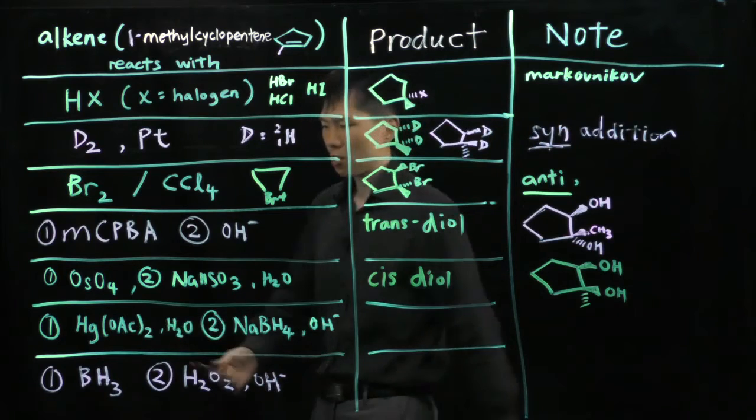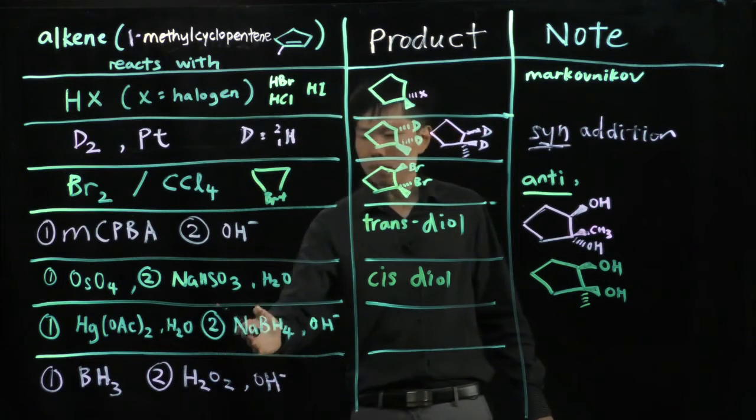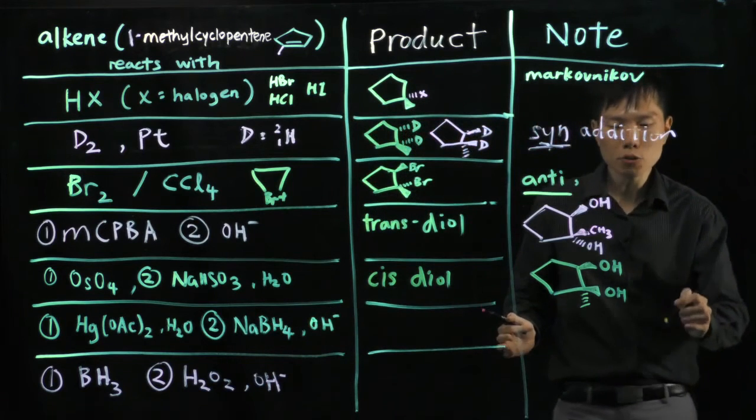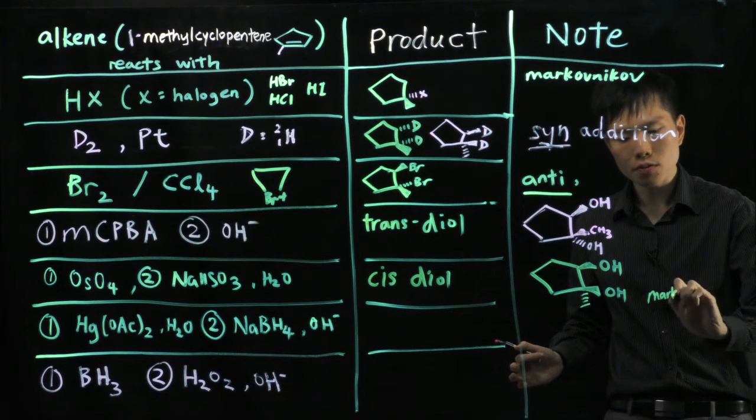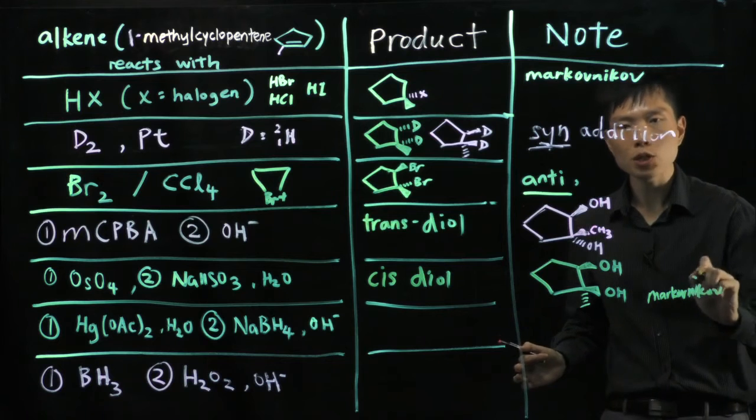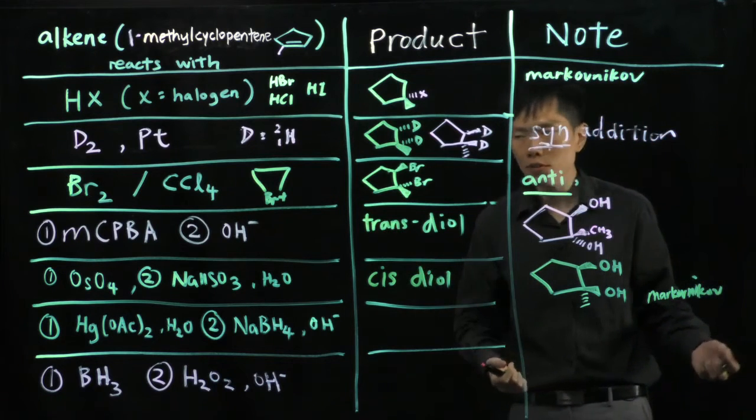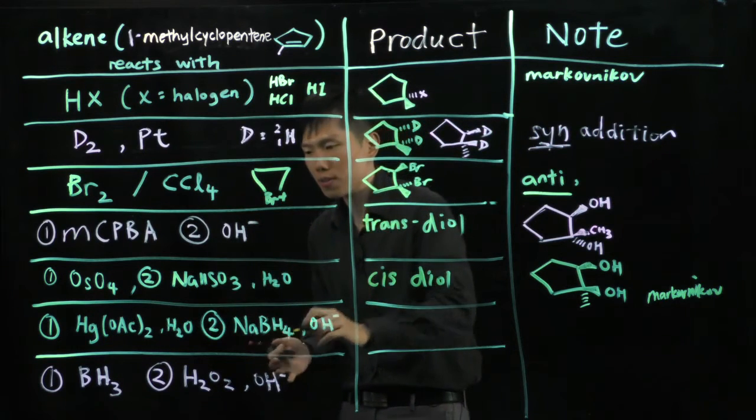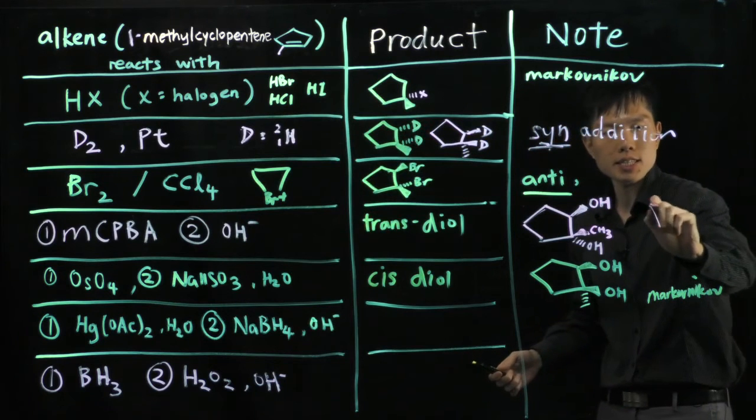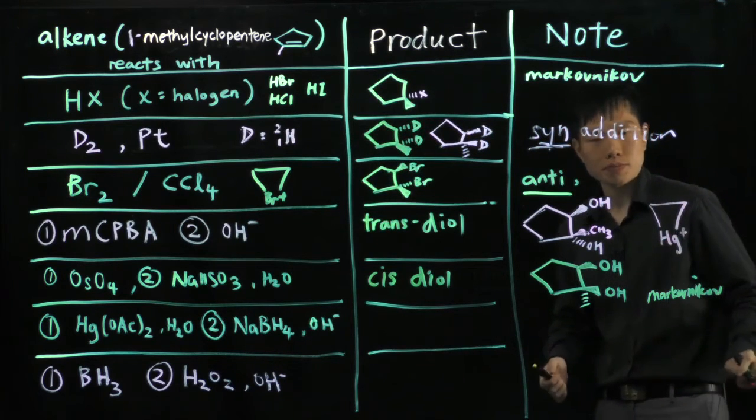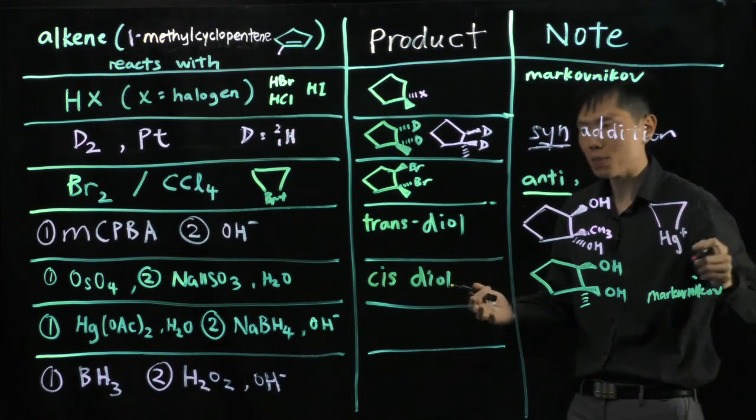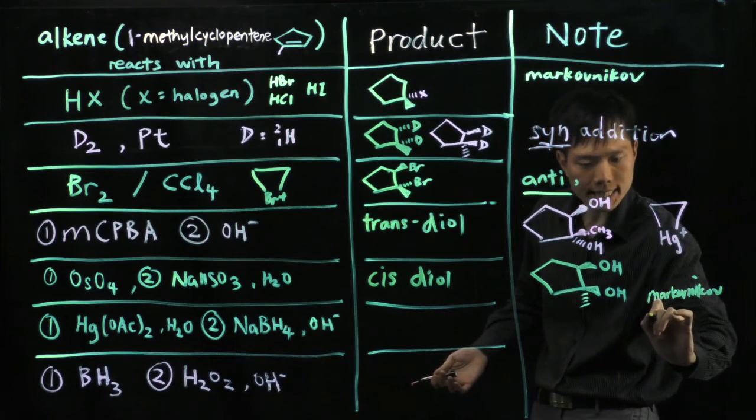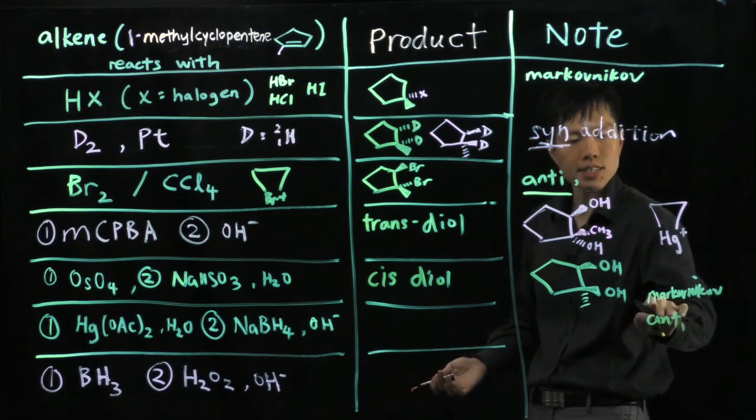Next case, you have oxymercuration followed by sodium borohydride. This step is what we call oxymercuration. It follows the Markovnikov rule. Oxymercuration, which means we talk about the stability of the cation being formed. In this case, again, it forms a mercurium ion, Hg triangle. Looks something like this, Hg positive charge. So once you see a three-membered ring, it must be anti-addition. And since it follows the Markovnikov rule,